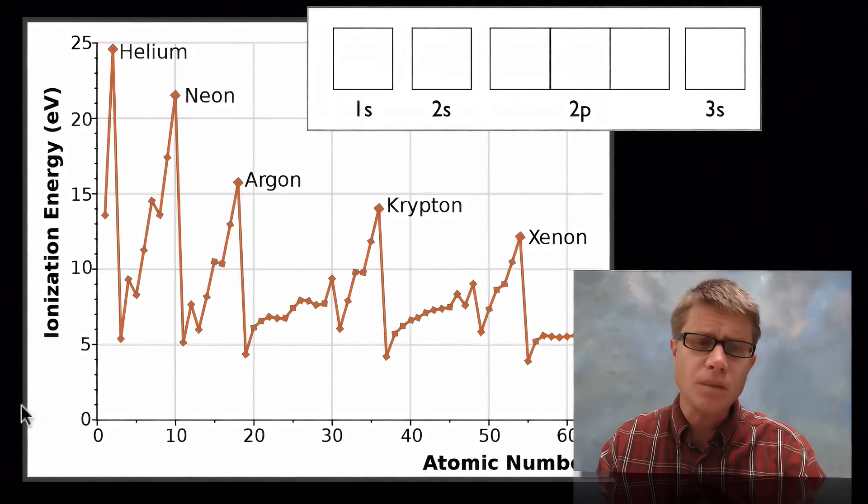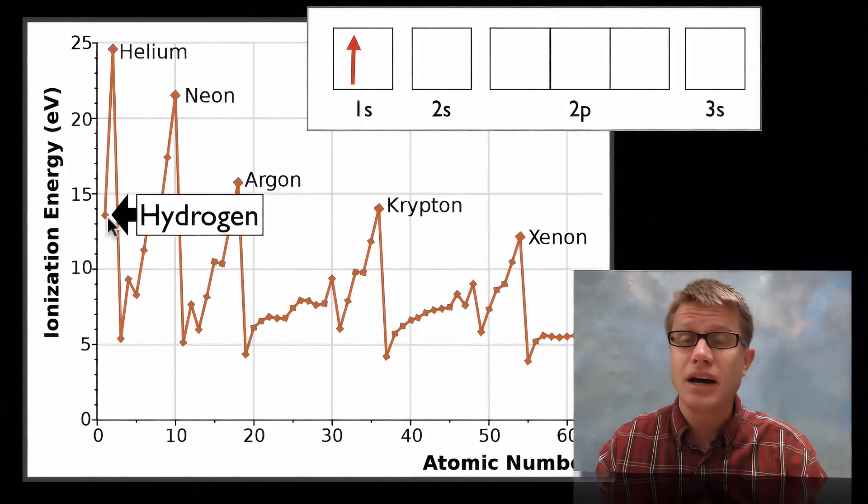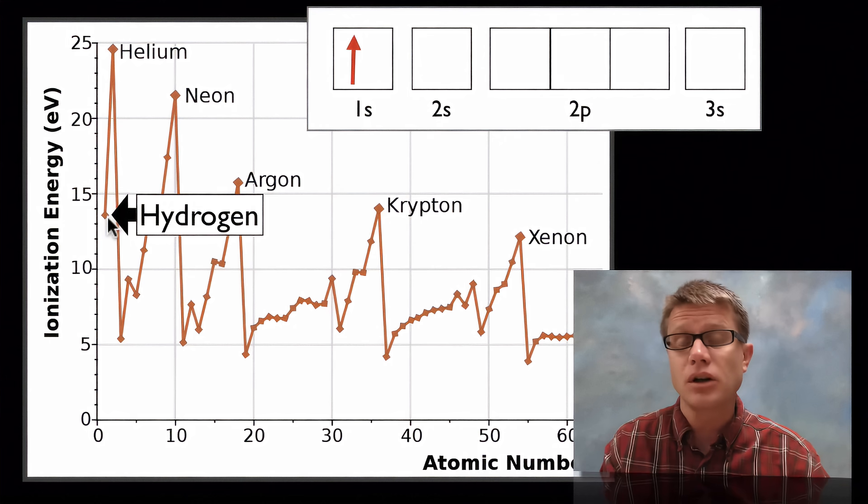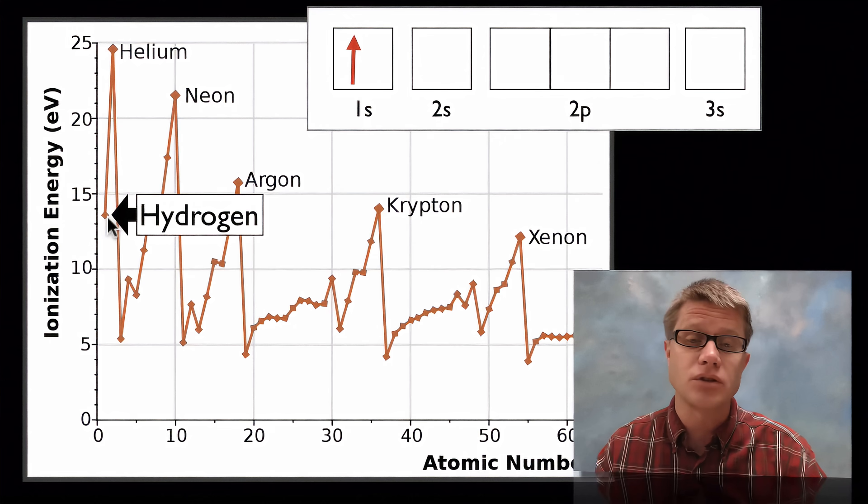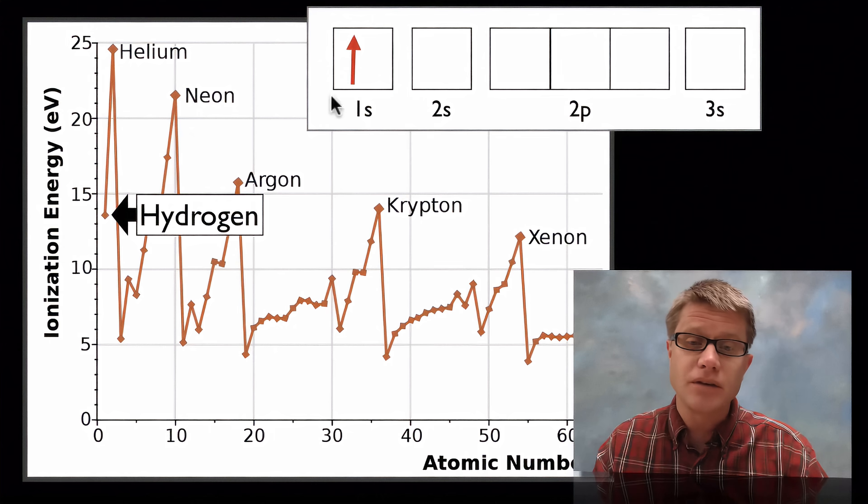And so let's kind of lay this out. So a shell is going to be, let's look at the first one. So here we've got hydrogen. So hydrogen is going to be right here. And we said it had a high ionization energy. And that's because it's really close to that nucleus. So it's close to the protons inside there. And so what we can do is we can fill out this box.